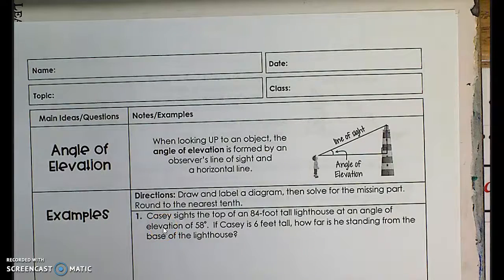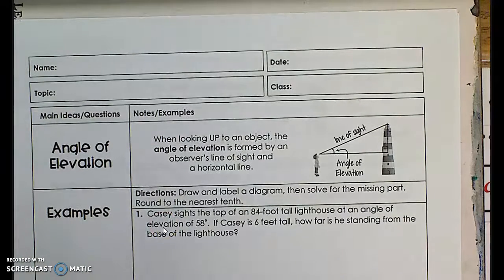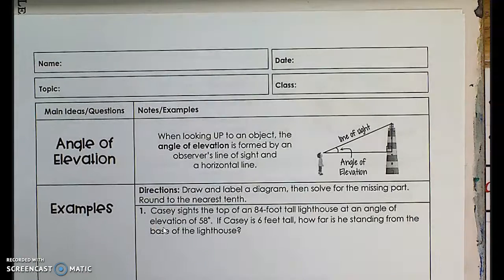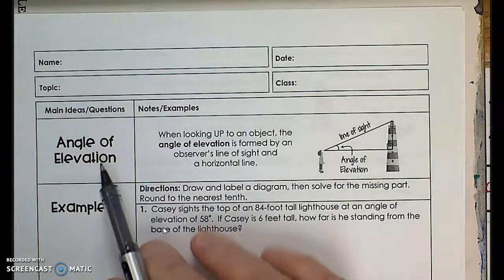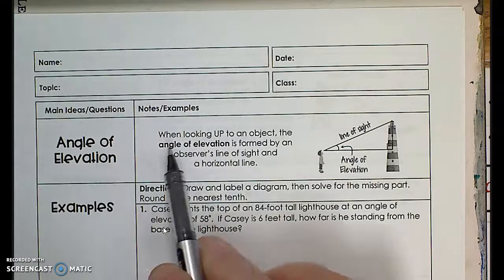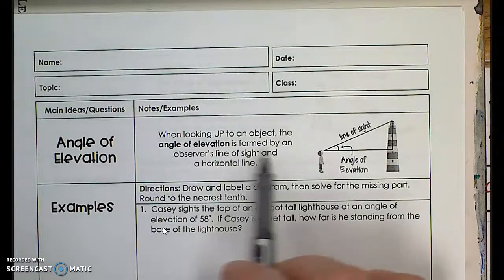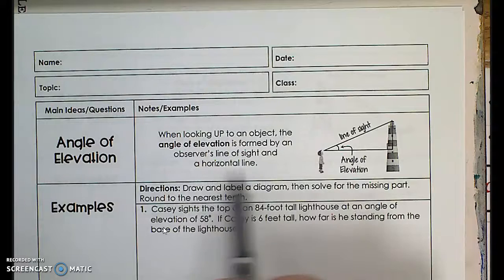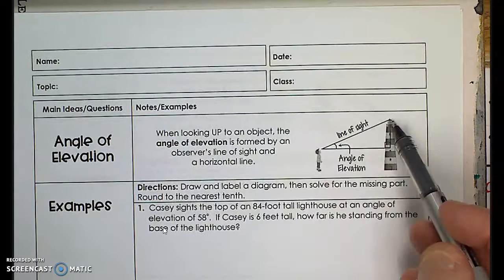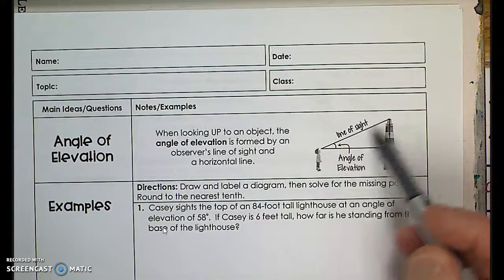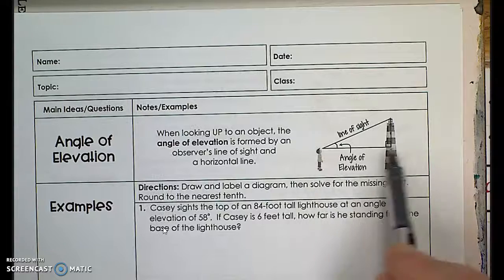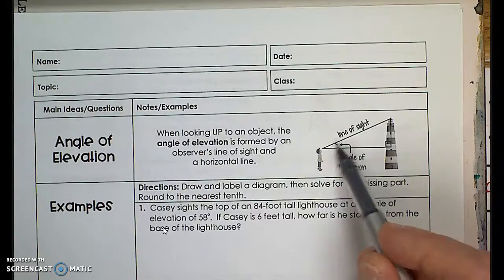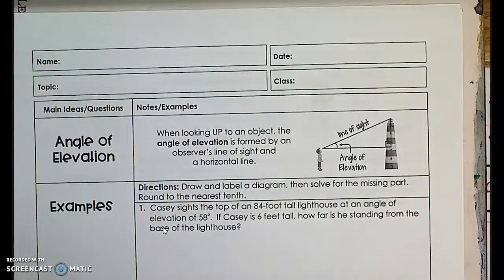We're in work packet 6.1 on page 11. We're going to talk about angle of elevation and angle of depression. When looking up at an object, the angle of elevation is formed by an observer's line of sight and a horizontal line. So you're looking up at an object — this is your line of sight, this is the horizontal line, and this is your angle of elevation.